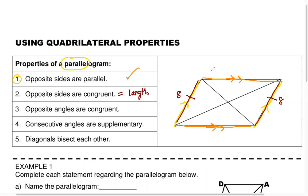In a parallelogram it's not one pair — it's both pairs. So the left has the same length as the right, and the top has the same length as the bottom. I'll give that two tick marks because it's a different length than the other pair — we'll say that is 14 units, and this is also 14 units.